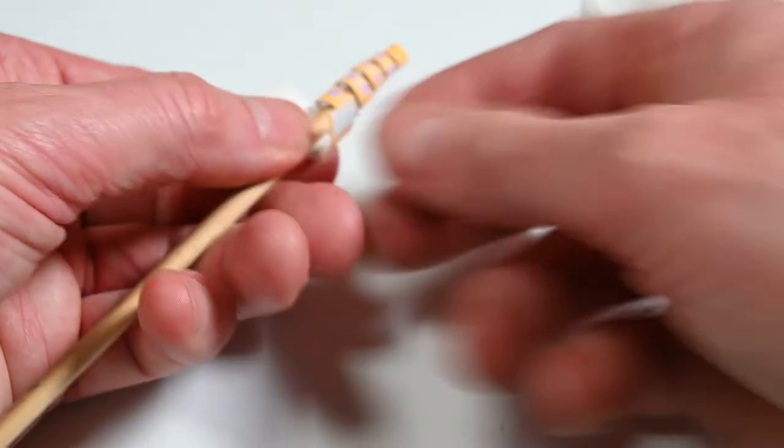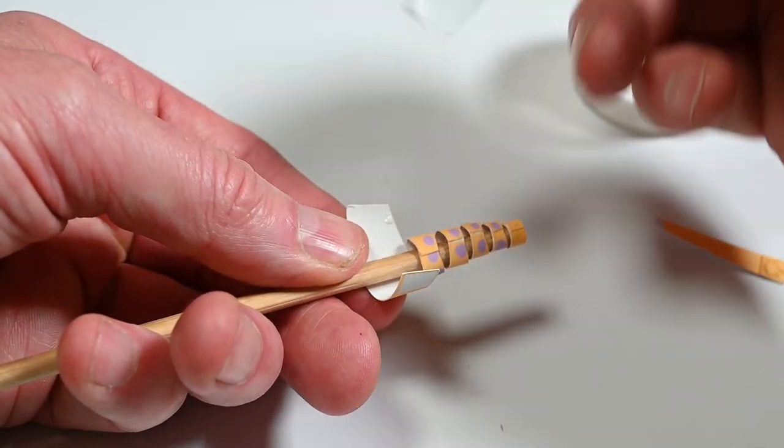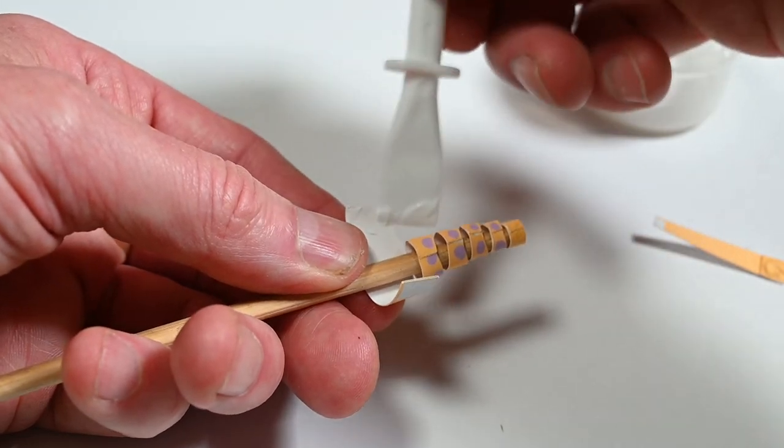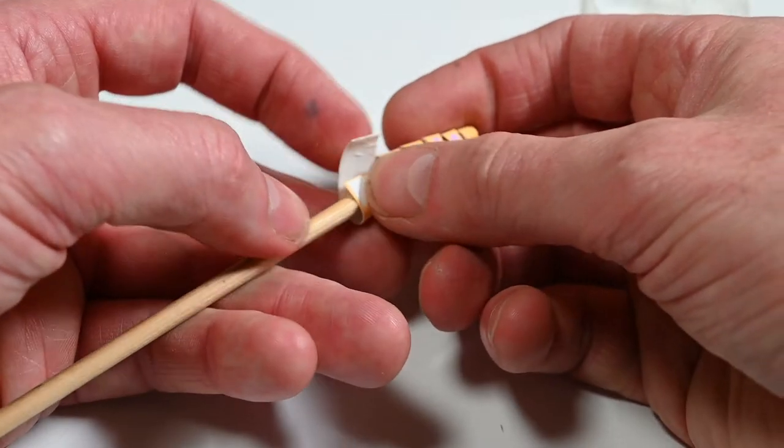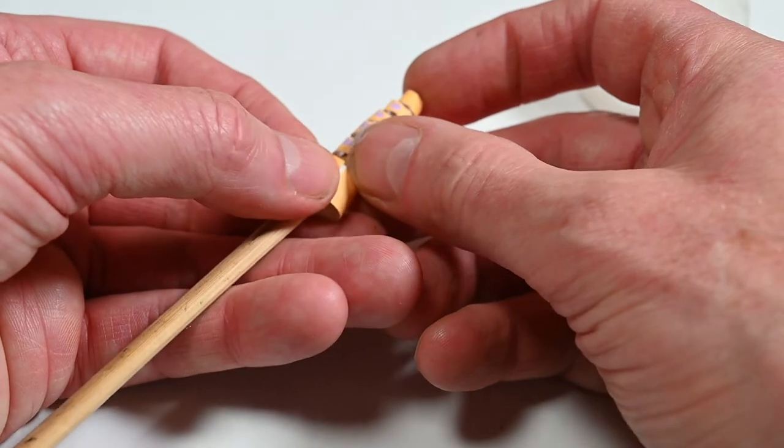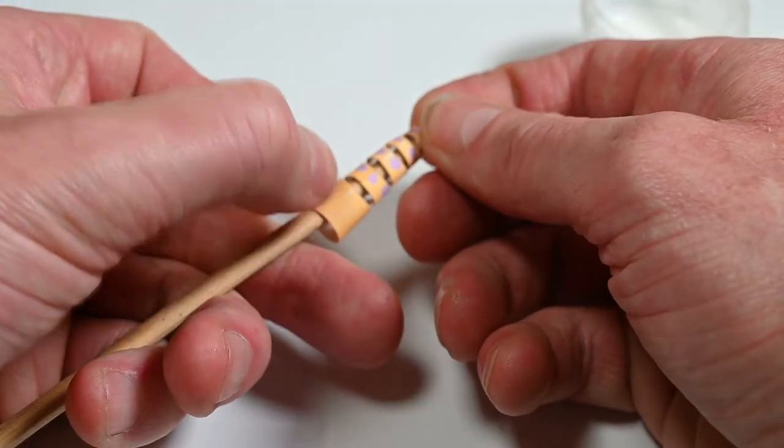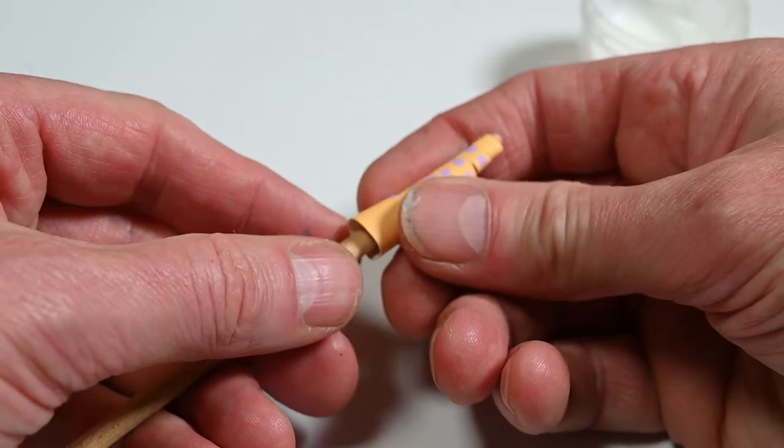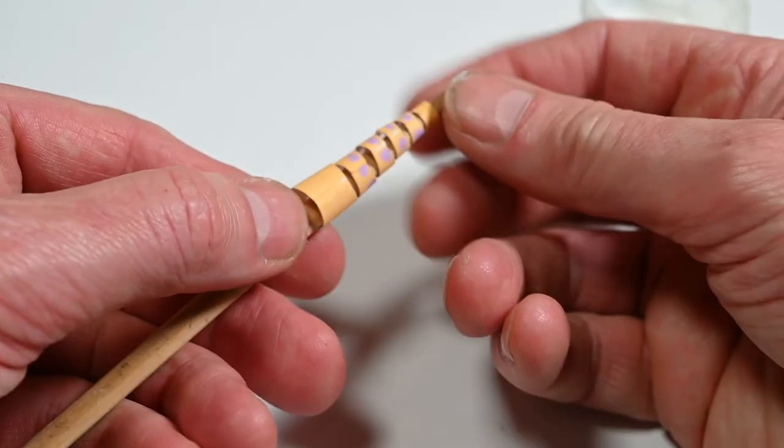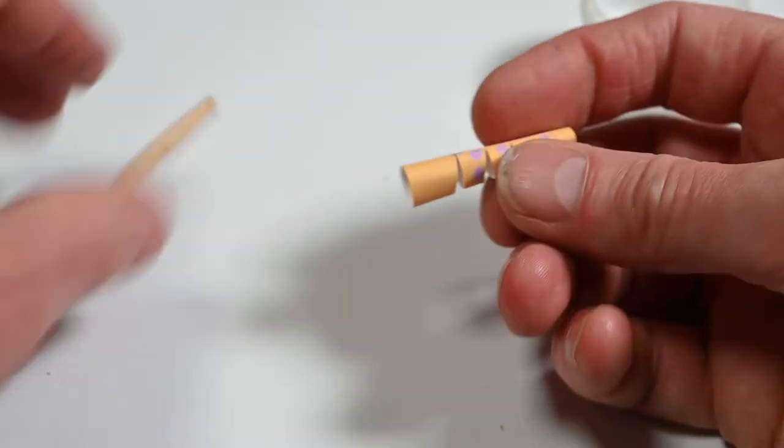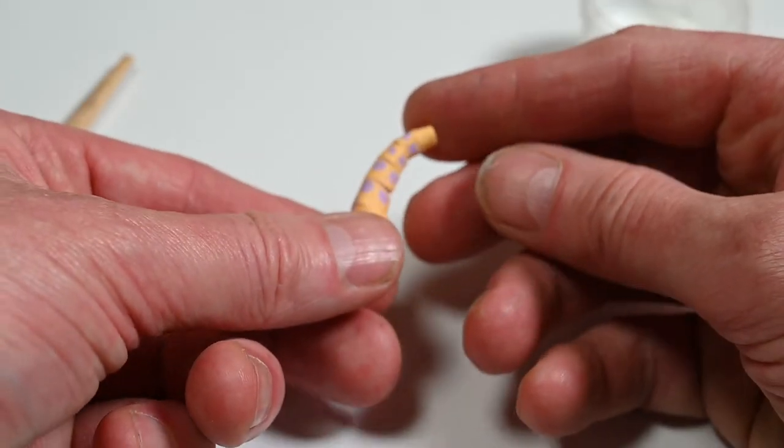And the last one. There we go. So now we've got six sections all ready to go like that and they'll curve like that on the neck of the dinosaur.